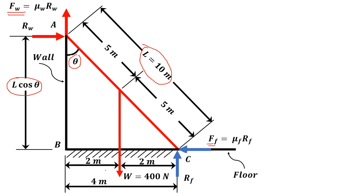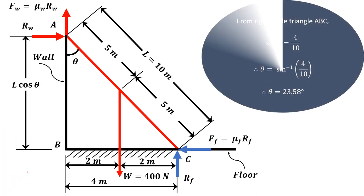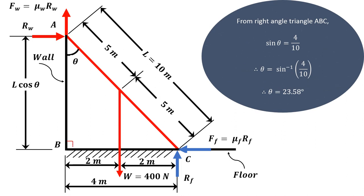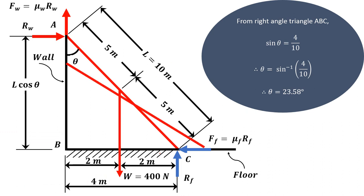The first step is to calculate the angle theta. In the right-angle triangle ABC, sin theta equals the opposite side 4 meter divided by the hypotenuse 10 meter, that is BC divided by AC. So sin theta equals 4/10, and therefore theta equals sine inverse of 4/10, giving theta equal to 23.58 degrees.